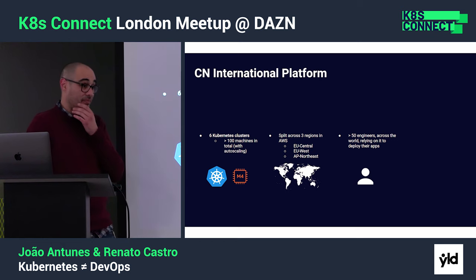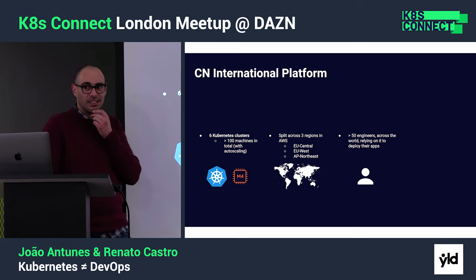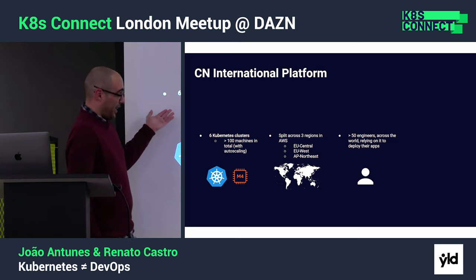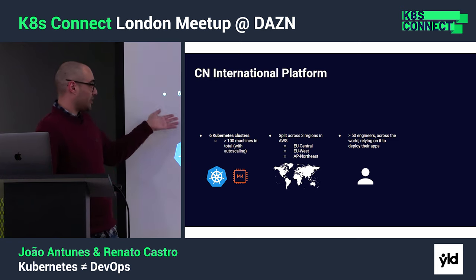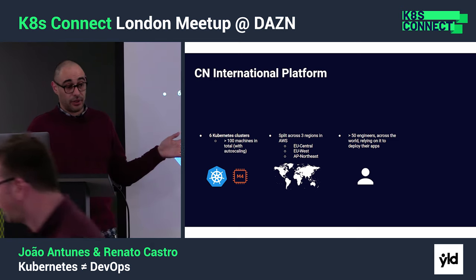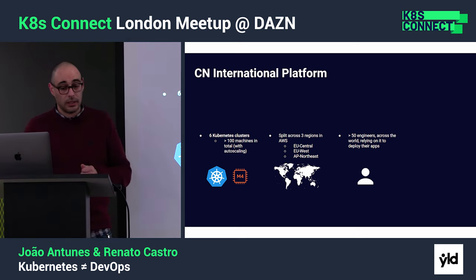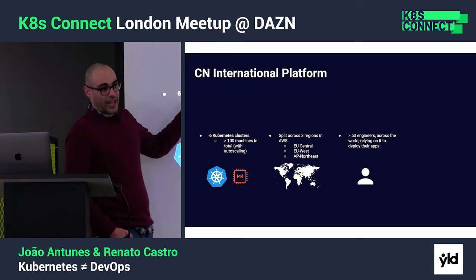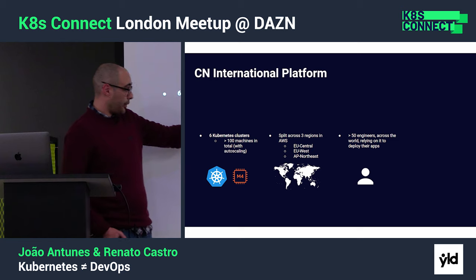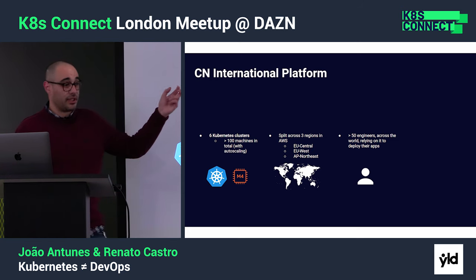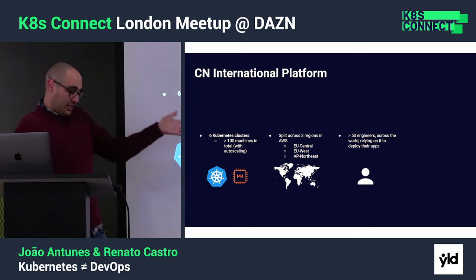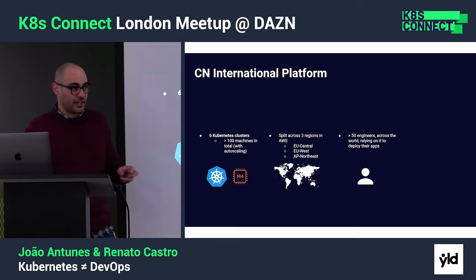The underlying platform is the same. The same thing applies — six clusters, more than 100 machines, with a big difference: autoscaling. So that number is not accurate at all; it depends on the date. Again, three regions and more than 15 engineers. The key difference is the way they interact.